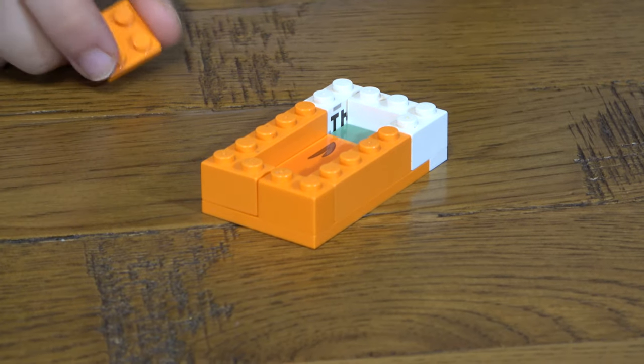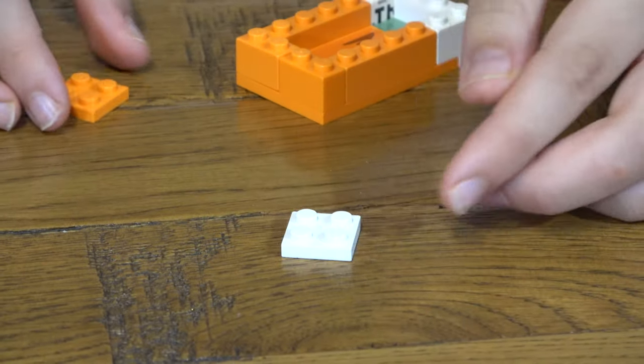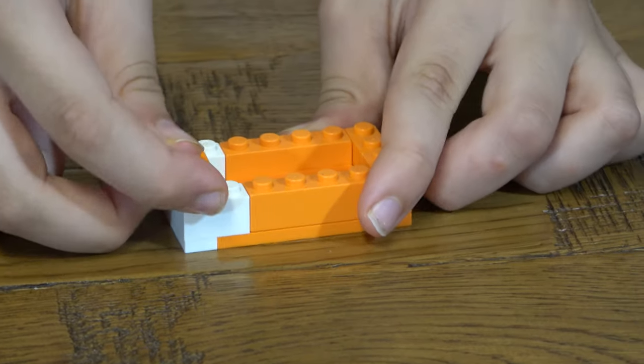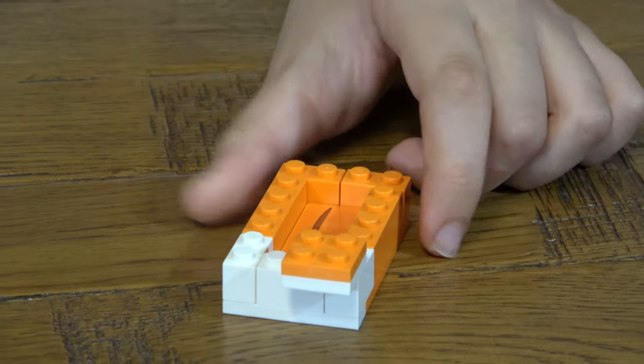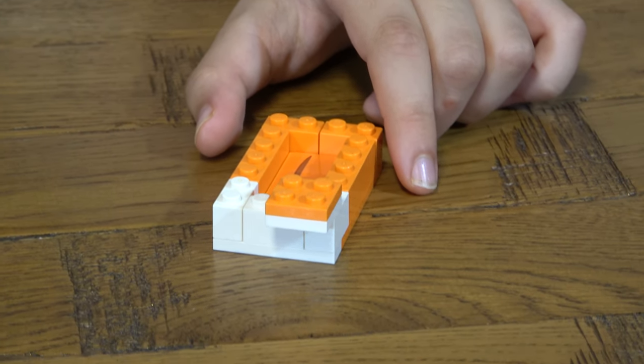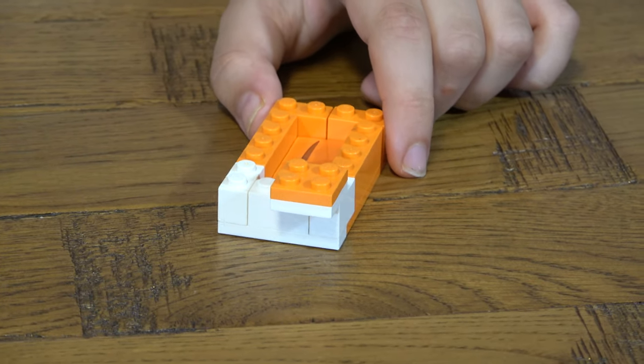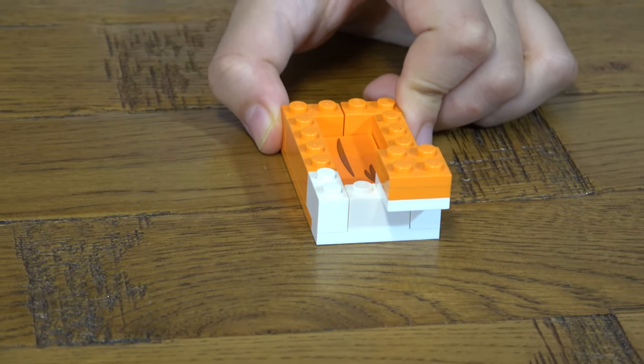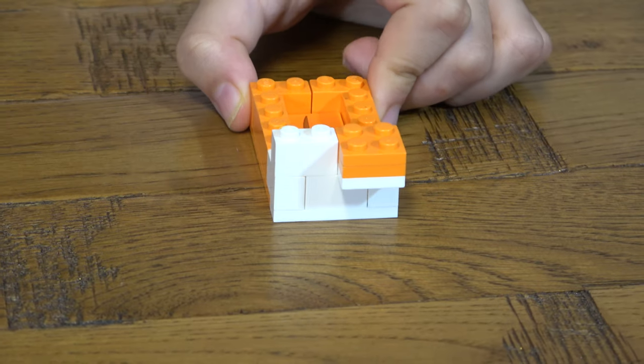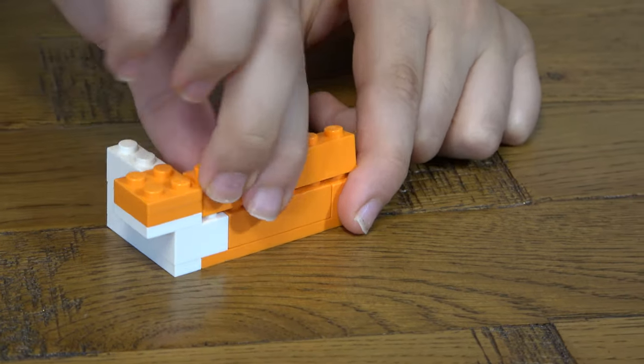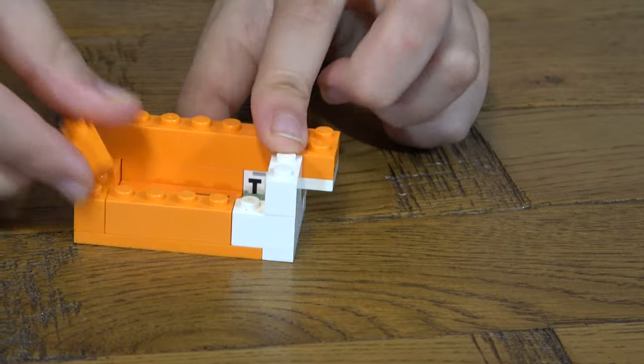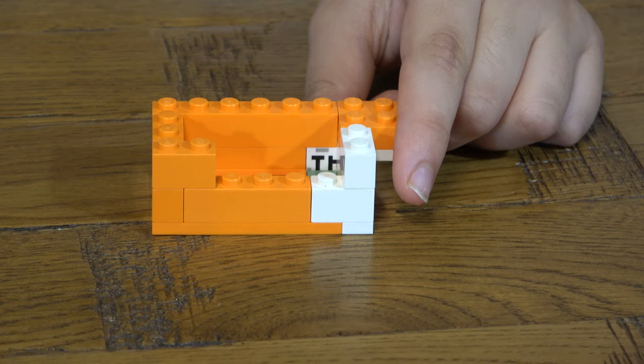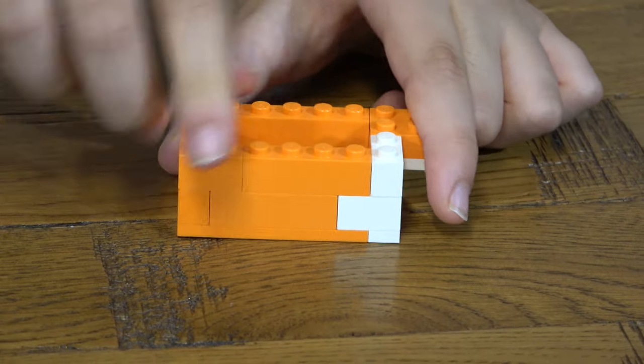And then next you get these two, you place them there. Then you get this, you place this here like so. Next thing you need to do is place this here, get one of these, place this here. This here, this here, like that.